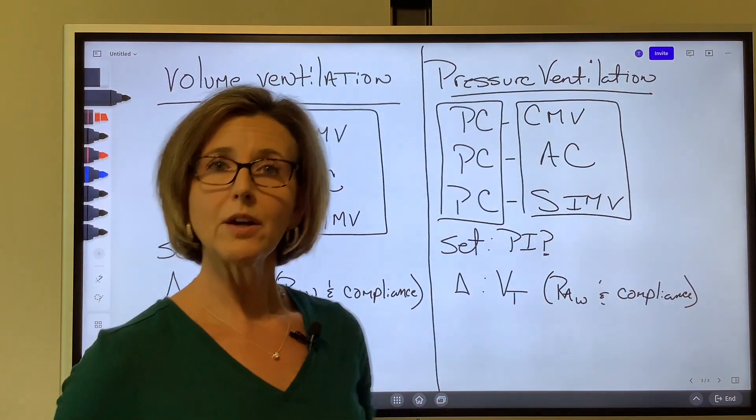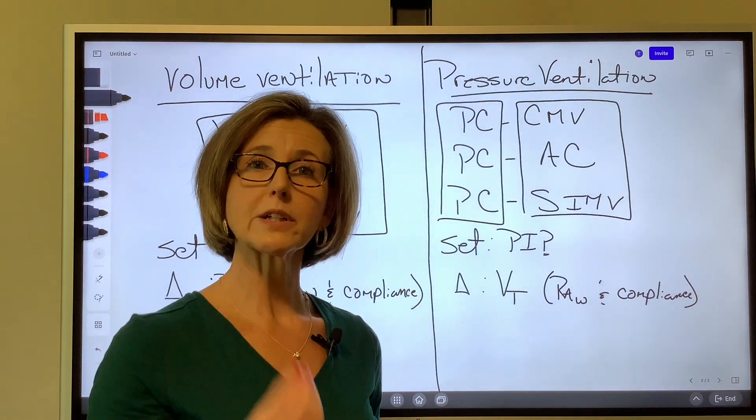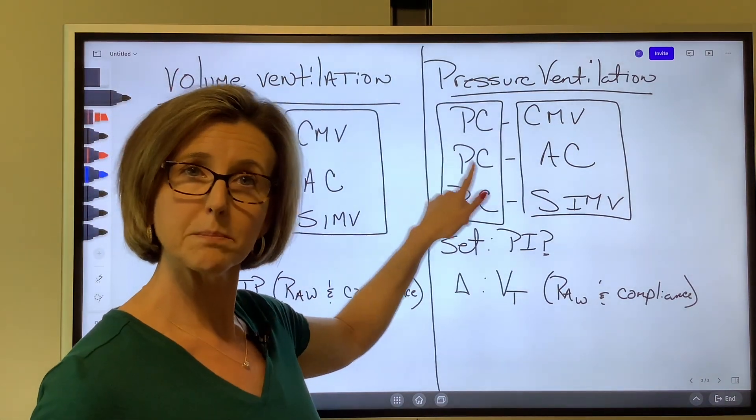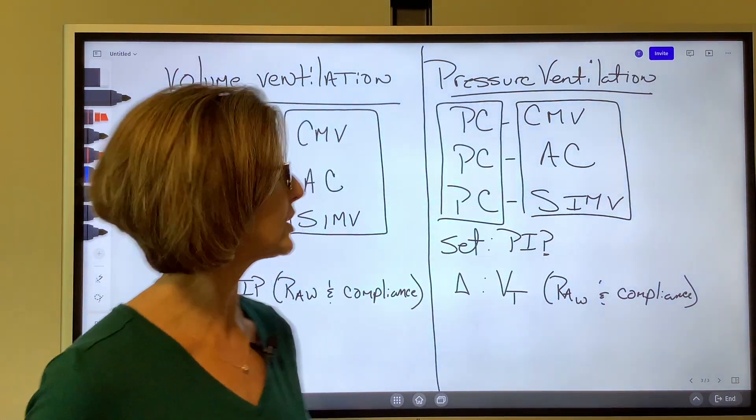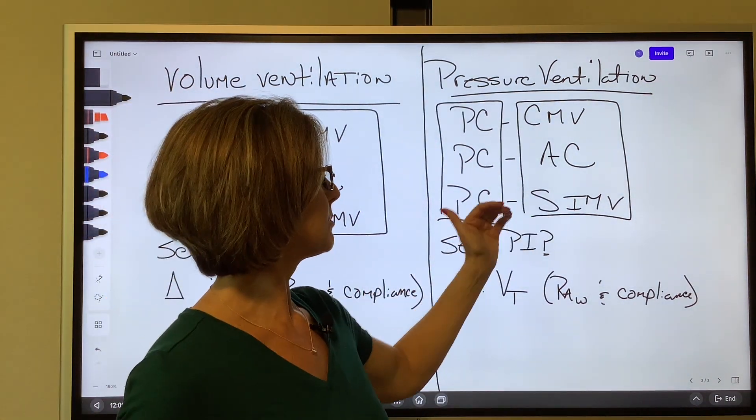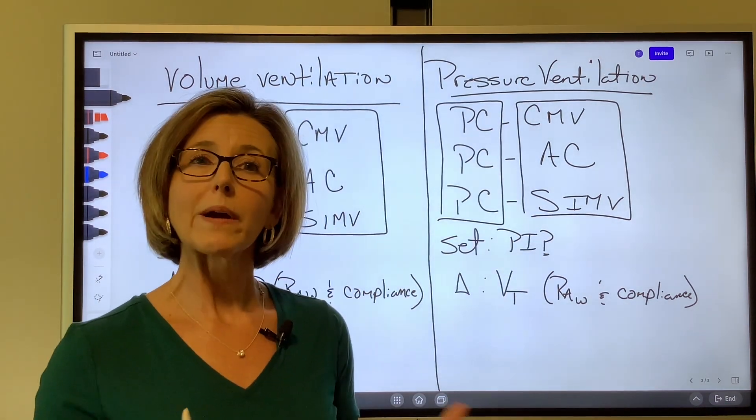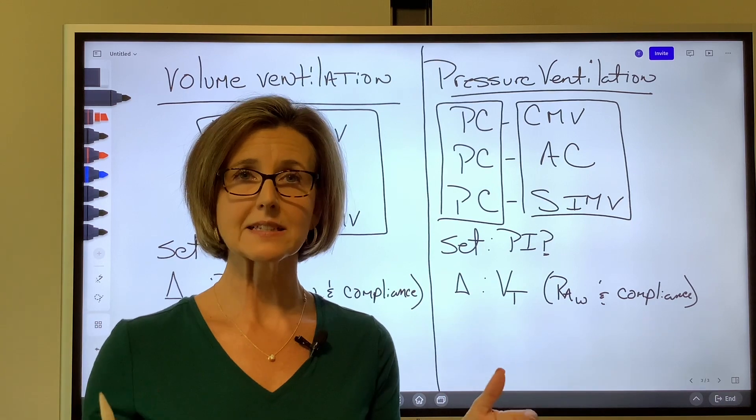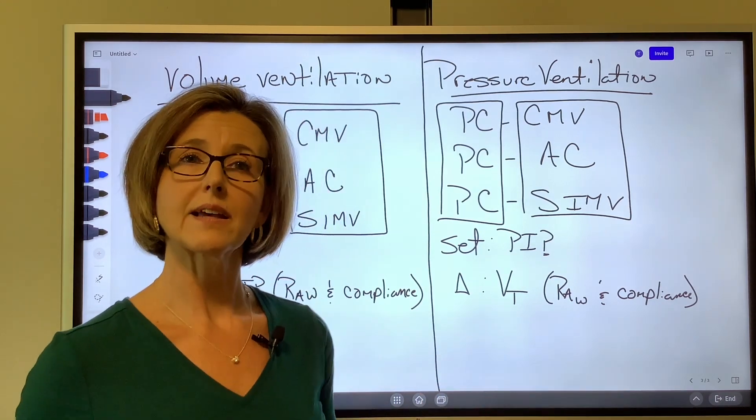In PC AC, we're allowing the patient to trigger a breath. But when they trigger a breath, they will get that set PIP because it's pressure ventilation. Or if we change them to SIMV, we are allowing the patient to breathe spontaneously in between the set breaths.